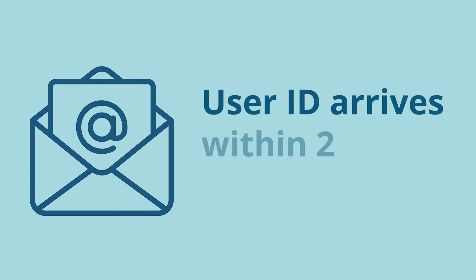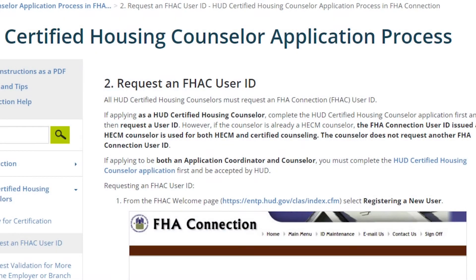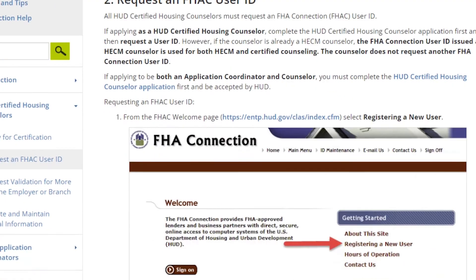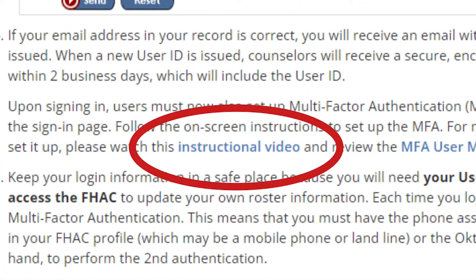If you entered your email address correctly, you will receive an email within 48 hours informing you that an ID was issued. The user ID will arrive to your inbox in a secure, encrypted email from FHA Connection within two business days. When you receive this email, you will be able to log in to FHA Connection. You will notice that the system also requires all users to set up multi-factor authentication to ensure the security of your account.